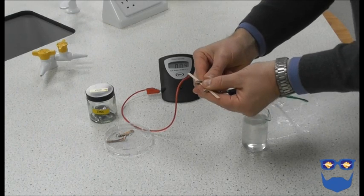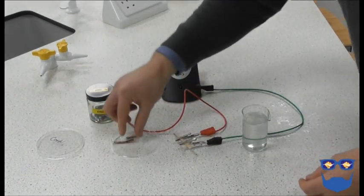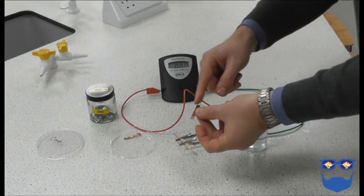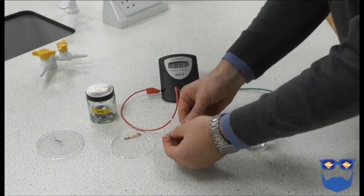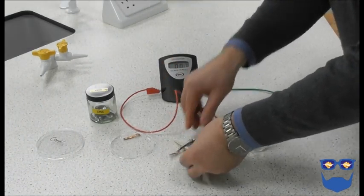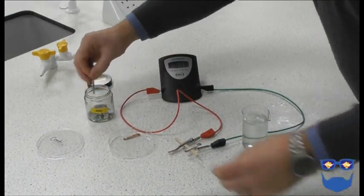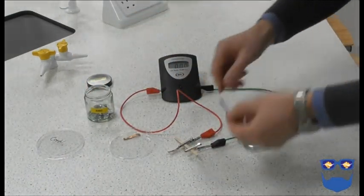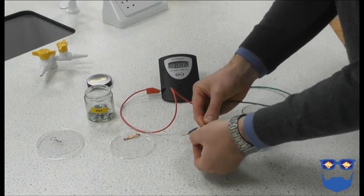I use a splint to ensure the electrodes are kept apart during the experiment. Pick one of the metal strips. I've chosen copper. Clip it onto the lead from the positive terminal. Pick a different metal strip. I've chosen zinc here. Clip it to the lead from the negative terminal.